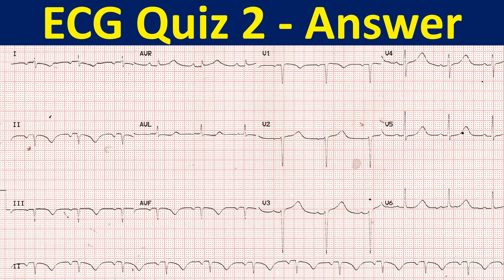When the left leg electrode is placed on the right arm and vice versa, the P wave, QRS, and T waves — which usually have downward vectors — get inverted. So this is a right arm-left leg lead reversal.